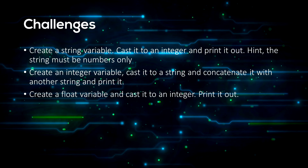Now for some challenges for you to do by yourself — I'm going to be doing a video giving the solutions to these. Firstly, create a string variable and cast it to an integer and print it out. A little hint: the string must be numbers only, otherwise you'll get an error. Create an integer variable, cast it to a string and concatenate it with another string and print it. And create a float variable and cast it to an integer and print it out.